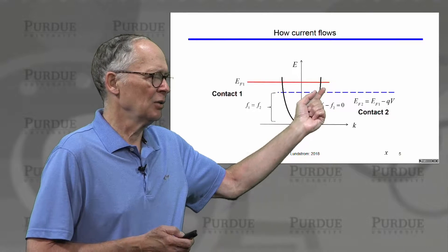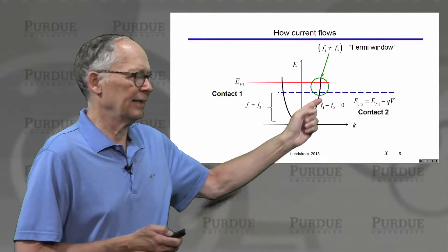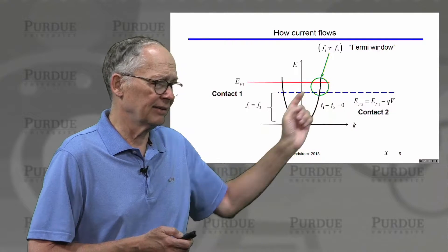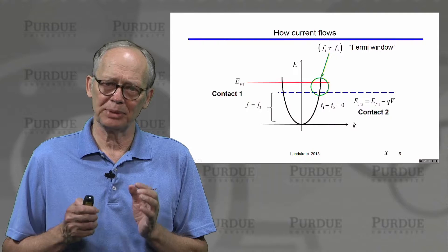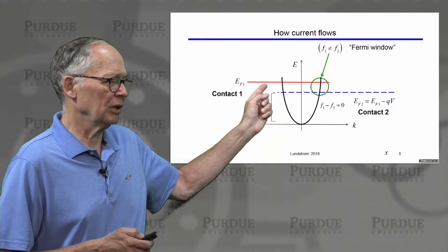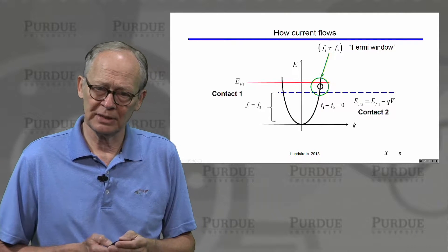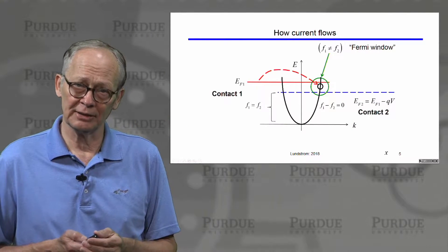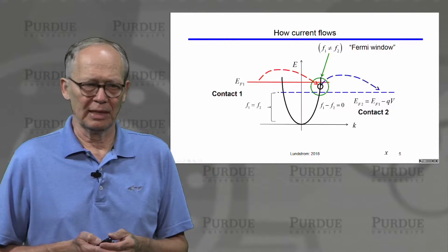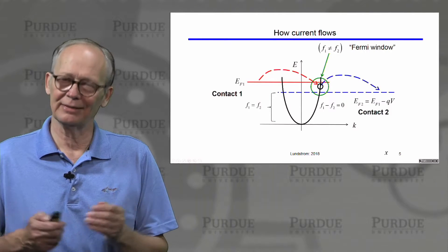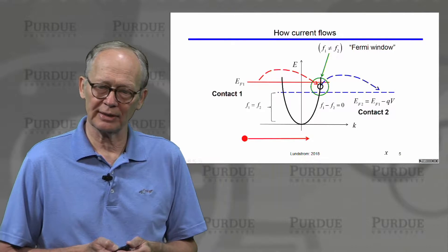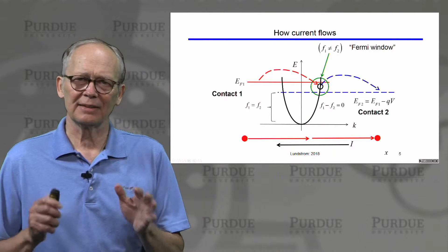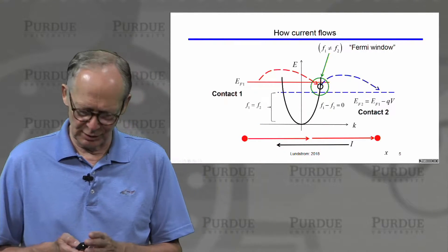There is an energy range where a state is below the Fermi level of contact 1 — so it should be filled — but above the Fermi level of contact 2 — so it should be empty. Contact 1 sends an electron in to fill the state; contact 2 pulls an electron out to empty it. That process — the electron going in filling the state, the electron leaving emptying the state — leads to a net current flow into contact 2. That's the physical picture for the Landauer approach.